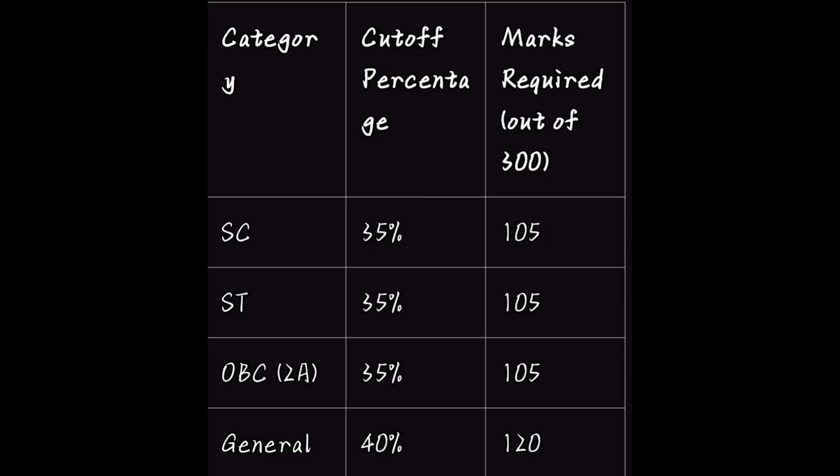But keep in mind that qualifying with the minimum cut off doesn't guarantee success. Qualifying with the minimum cut off doesn't guarantee success. For example, if many candidates from your category — like 2A, PH, or SC/ST — are also required to get 35%, but they are scoring 200, 180, 218, or 230 marks out of 300, those candidates will easily get qualifying results. If many candidates from your category score higher, only the top scorers will be selected. So always aim beyond the cut off.